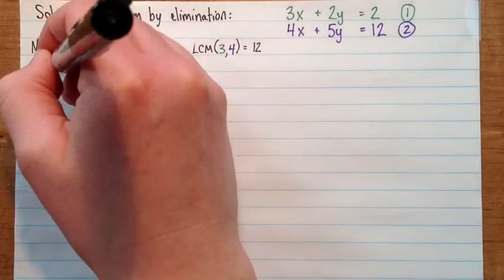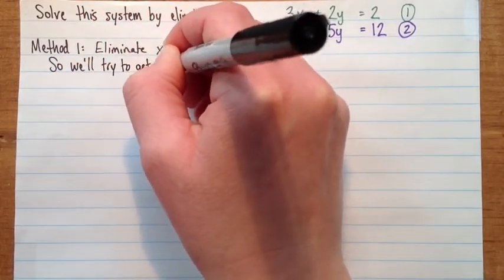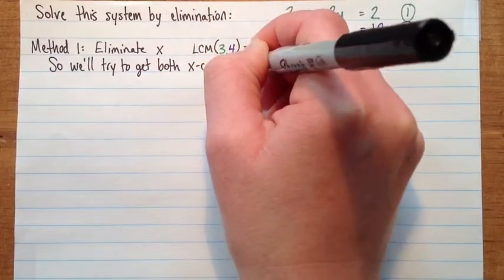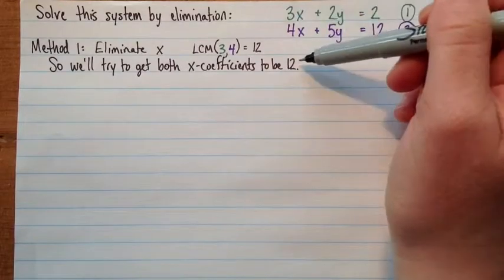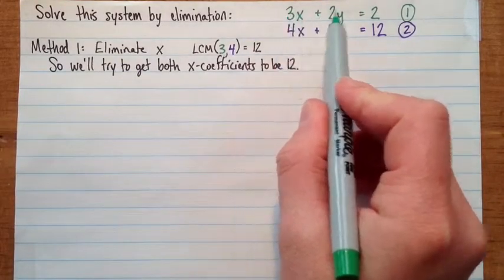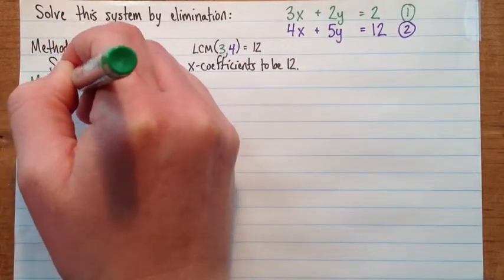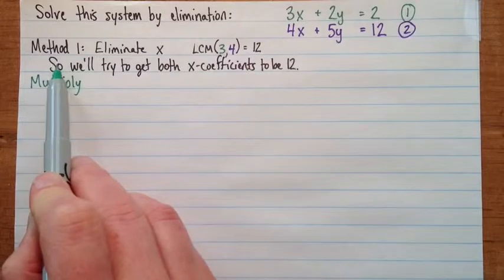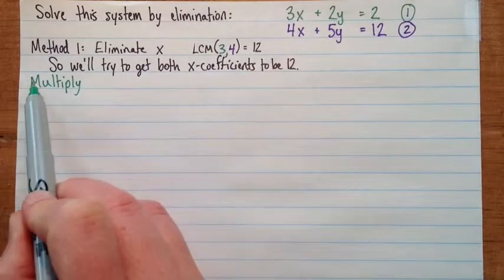Maybe I'll write that down. So we'll try to get both x coefficients to be 12. Okay, so what could we multiply 3x by to get 12x? Well, we could multiply by 4. So we'll start, but we can't just multiply the x term, we have to multiply the whole equation. So the first thing we'll do is multiply, and as you write your solutions, in your notes you should write everything, but you don't need to write this line. You should write down what the lowest common multiple is. And then you have to write this down.